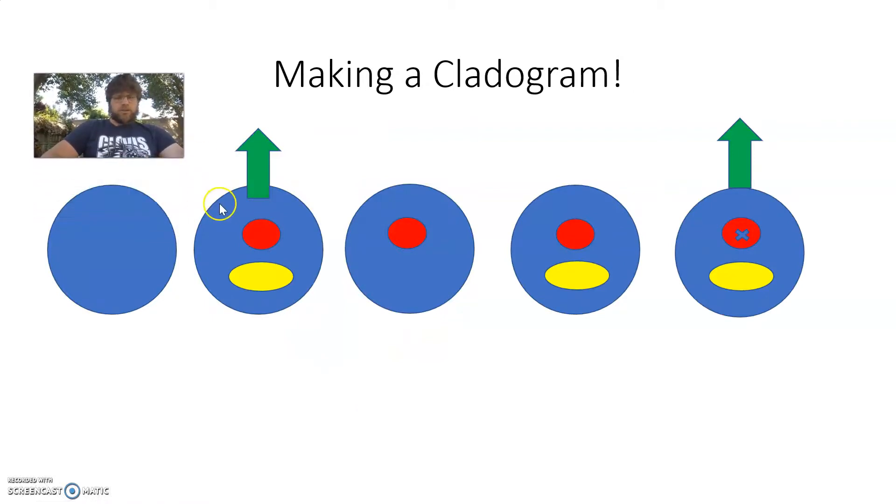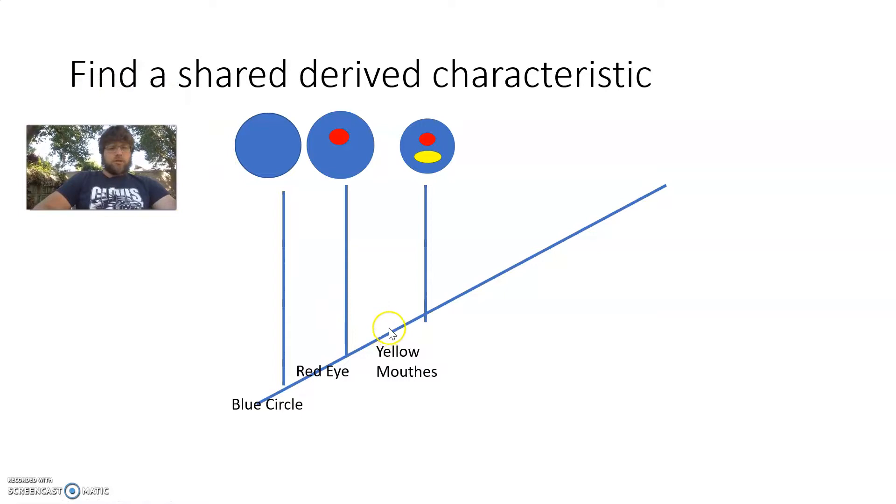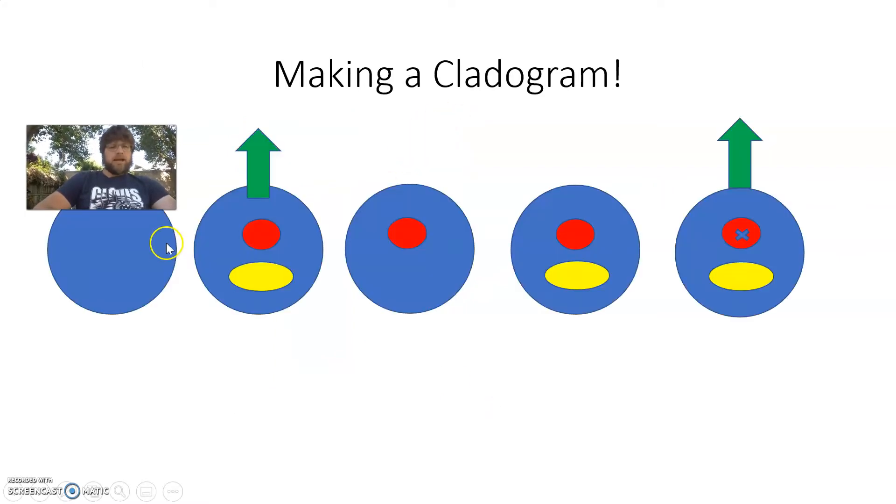All right. So then those other three species. One, two, three. I look at them, and I see yellow mouths are shared-derived characteristics. So on my cladogram, I'm going to put yellow mouths, write it in, as my shared-derived characteristic. And then I'm going to show one population diverging. That's the modern-day, that forms the modern-day yellow-mouth species.